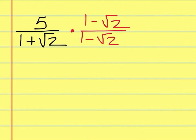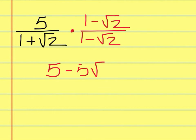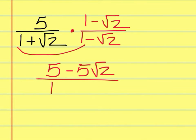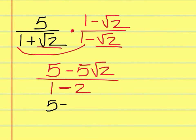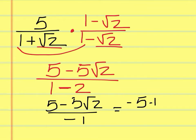On the top side we have 5 times 1 minus the square root of 2. 5 times 1 gives me 5, and 5 times minus the square root of 2 is minus 5 square root of 2. On the bottom, 1 times 1 is 1, and square root of 2 times square root of 2 is 2, with a minus sign in the middle. So the top is 5 minus 5 square root of 2 over negative 1. Change the sign of everything to get negative 5 plus 5 square root of 2, and over 1 does not need to be written.